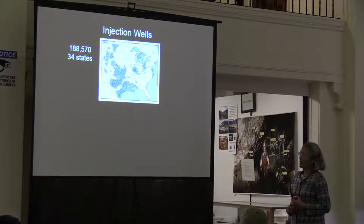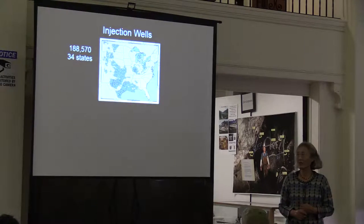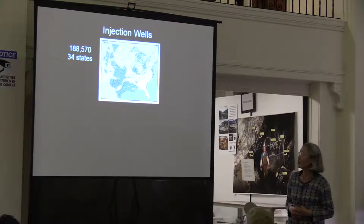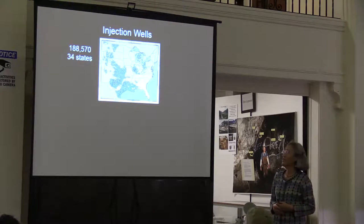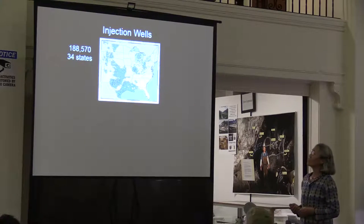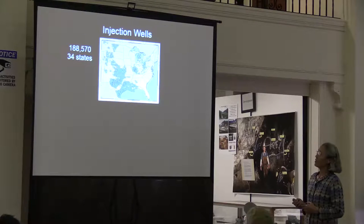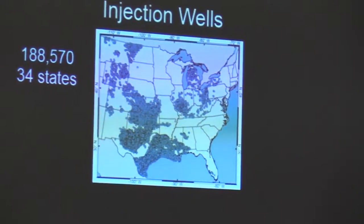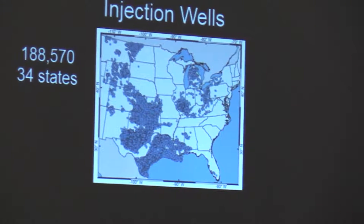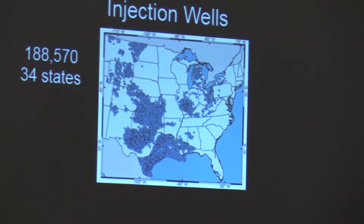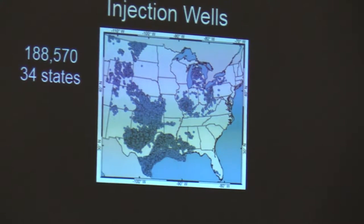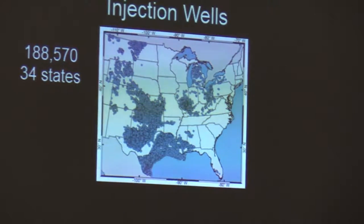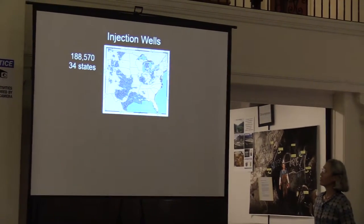When we started the project, we decided to look at two data sets: the injection well data set and the seismicity data set. This is a map showing injection well sites from 34 states in the central eastern U.S. All these blue dots are plotted on the basis of data we collected over the last few years, from open sources mostly from the state oil and gas commissions or conservation commissions of various kinds.